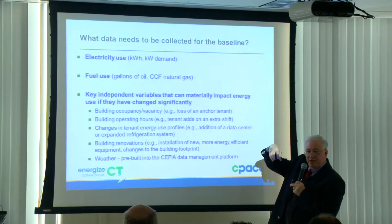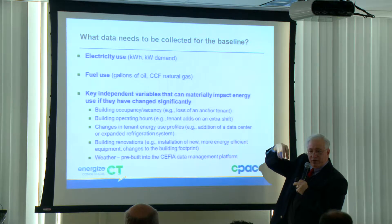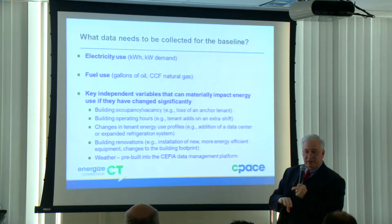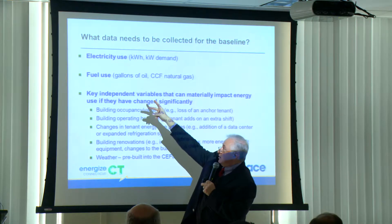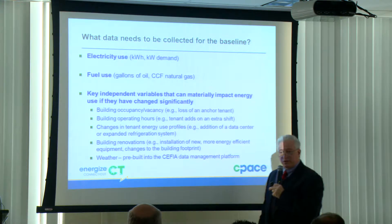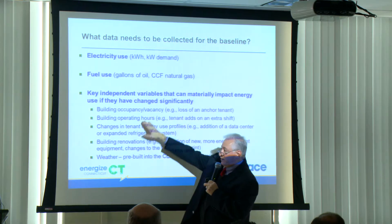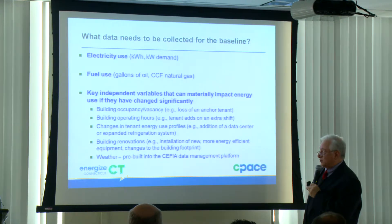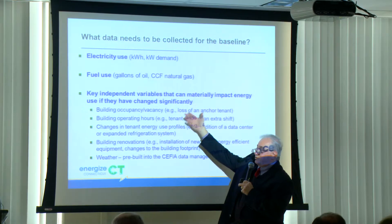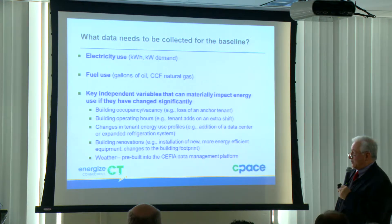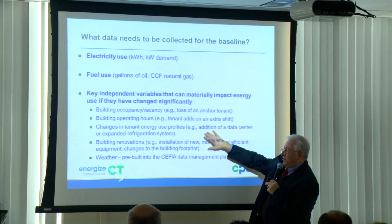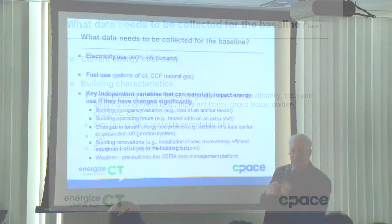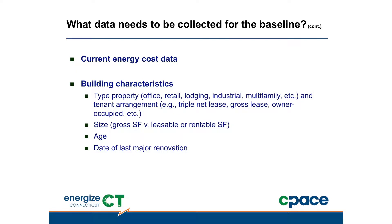When the ASTM standard and the data management platform operate, they take all this data and produce two equations — one for electricity and one for fuel use — regressing all the actual data against independent variables. Obviously if there's no change in something, you're not going to regress it, but if there are changes, you want to be aware of them. We also like to get energy cost data and building characteristics. You'll see all these questions asked in the data management platform. When you put in the square footage, at least ask the owner for both the gross square footage and the rentable or leasable square footage.